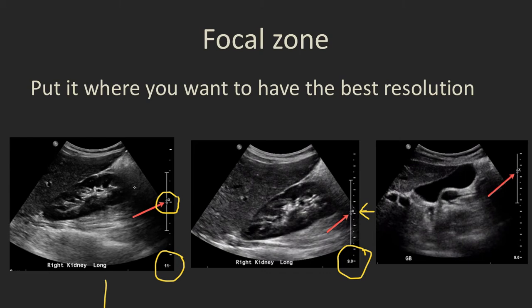In the image on the right, although it also has a field of view of 9 centimeters, we're really wanting to look at the gallbladder, so our focal zone has been moved all the way up so it's at the same level as the gallbladder. Set the depth and then set the focal zone, and again you will have to change this during the period of the examination.